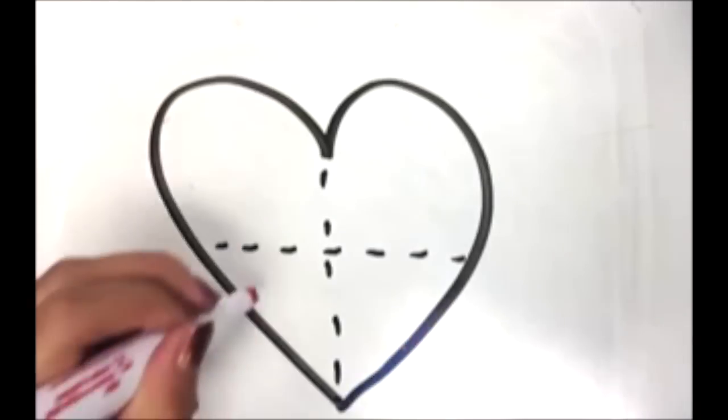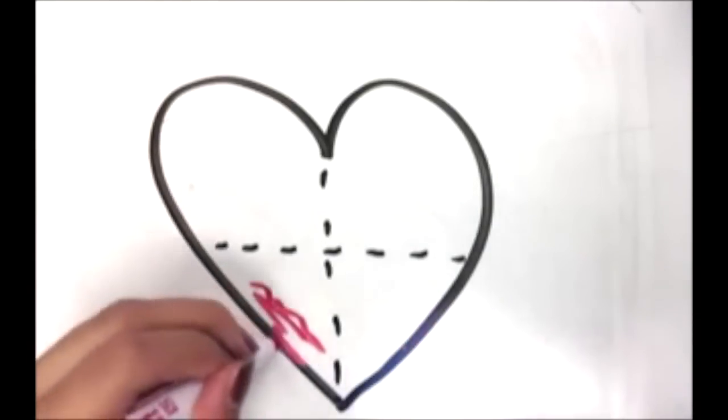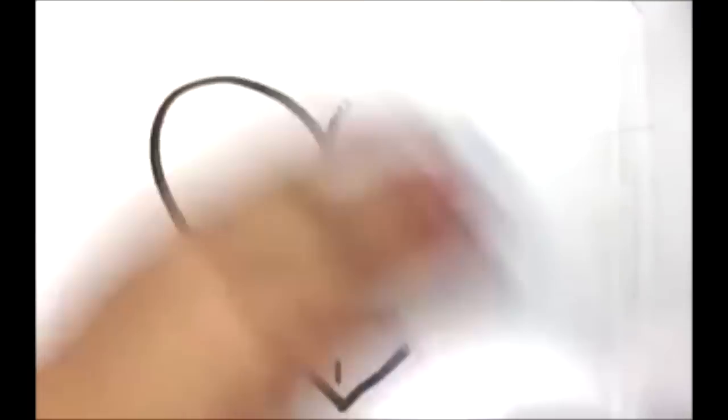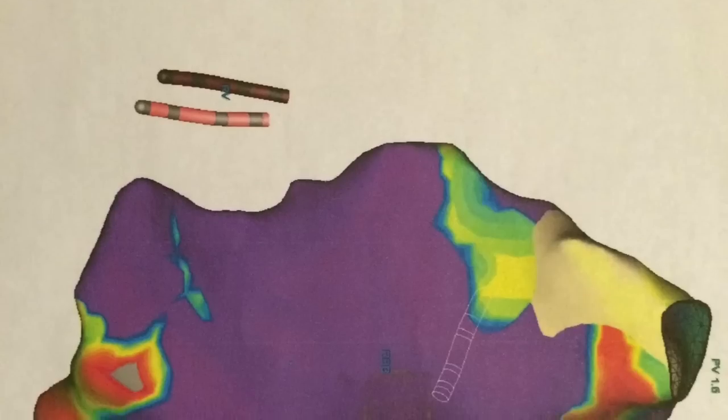ARVC is a condition when scar tissue and fats replace the muscle in the right ventricle, which leads to arrhythmia. In this picture, purple is good and gray is bad.